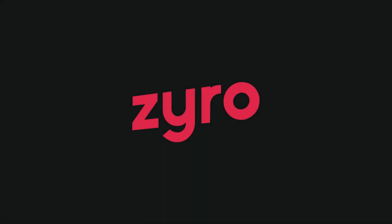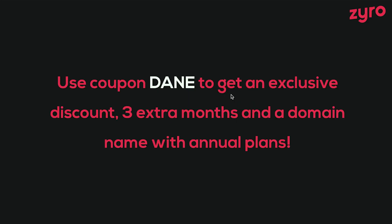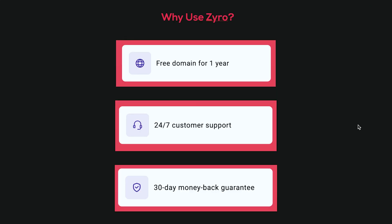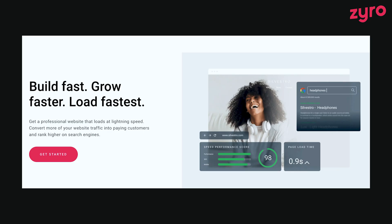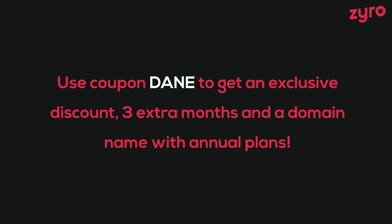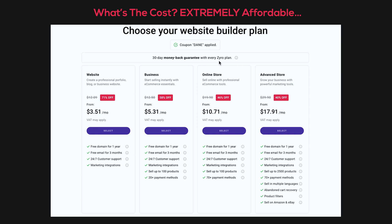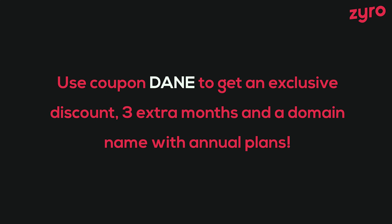One last thing before I let you go: Zyro has an exclusive offer right now. If you use the code Dane, you'll get an exclusive discount plus three extra months, and a free domain with annual plans. You also get 24/7 customer support and a 30-day money-back guarantee. On top of that, Zyro is one of the fastest loading platforms available — faster loading times means a better customer experience, which means increased revenue and better customer feedback. Use the code Dane today to sign up with Zyro.